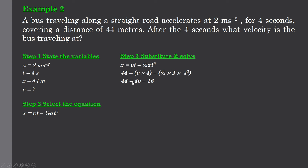So that gives us 44 equals 4v take 16. Because a half times 2 is just 1, times 4 squared is 16 rather than 14. So 44 equals, sorry, 44 equals 4v take 16.